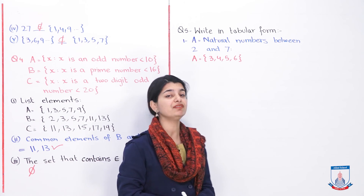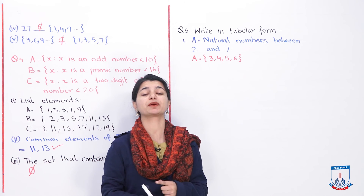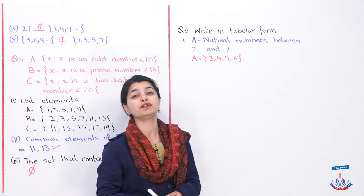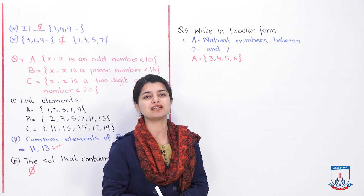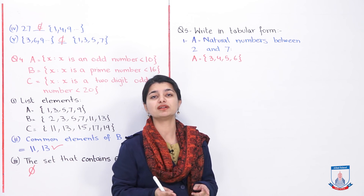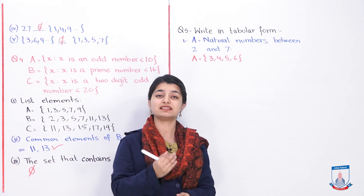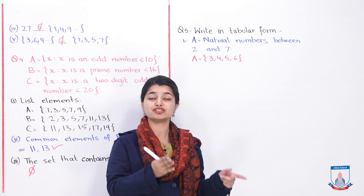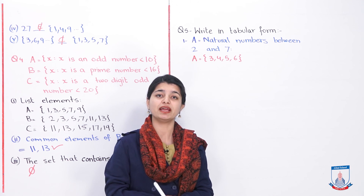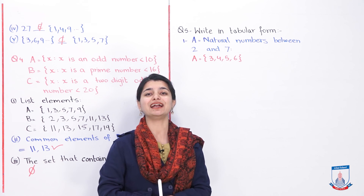Now for question number 5, you have to write sets in tabular form. They have given the descriptive form. For part A, natural numbers between 2 and 7 gives us {3, 4, 5, 6}. You represent them as one set in tabular form. Do part B similarly. Part C is about rainbow colors — you write all seven colors of the rainbow in one set. With this, today's lecture is finished. The next lecture will cover question number 6 onwards, solving the remaining questions of test paper 1. I will see you in that lecture. Inshallah. Allah Hafiz.